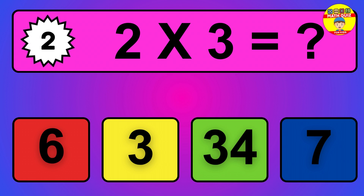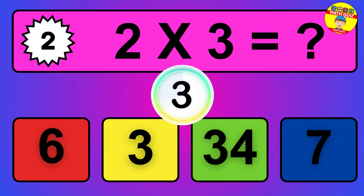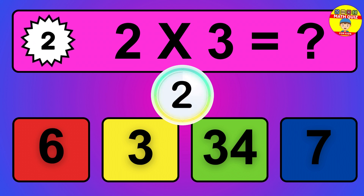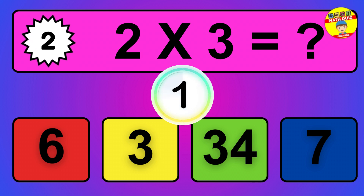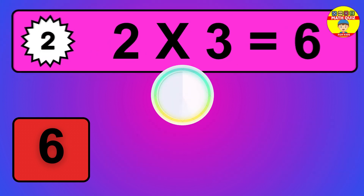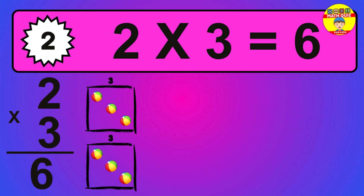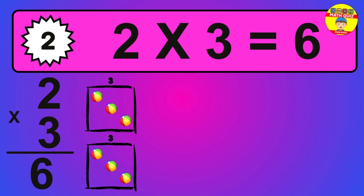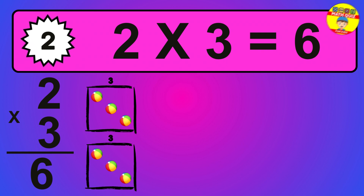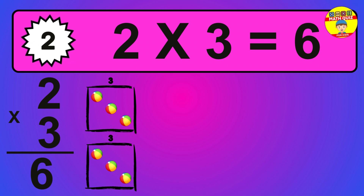Question 2. 2 times 3 equals what? So the answer is 2 times 3 is 6. To calculate, we have 2 groups with 3 balls each one. So how many balls do we have? 6 balls.